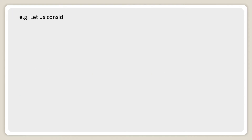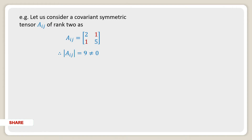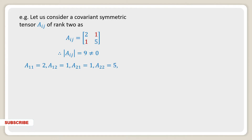For example, let us consider a covariant symmetric tensor Aij of rank 2 as Aij equal to the matrix [2, 1; 1, 5]. Therefore the determinant of Aij equals 9, which is not equal to 0. Here A11 equals 2, A12 equals 1, A21 equals 1, A22 equals 5.